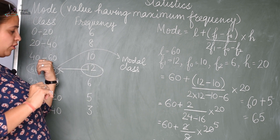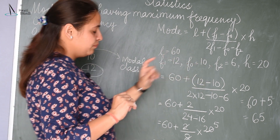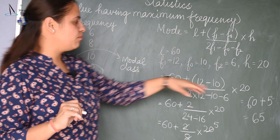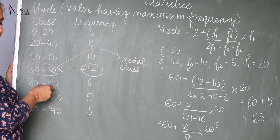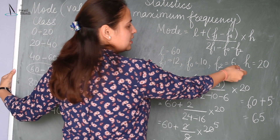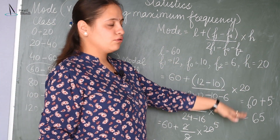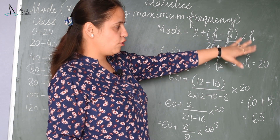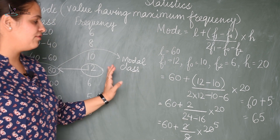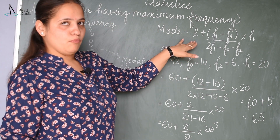The class preceding the modal class is 40 to 60, so F0 = 10. F2 is the frequency of the class succeeding the modal class — that is 80 to 100, with frequency 6, so F2 = 6. H is the width of the class interval. Substituting all values gives us the mode. This is how we find the mode using this formula.